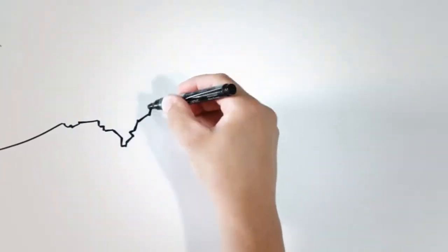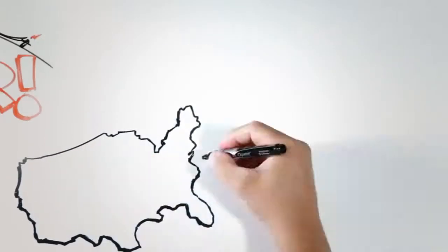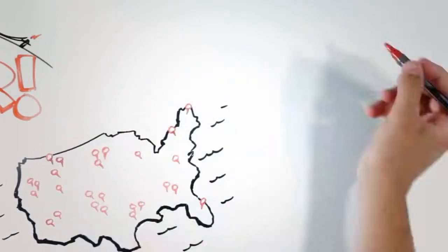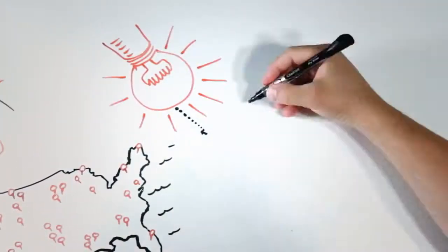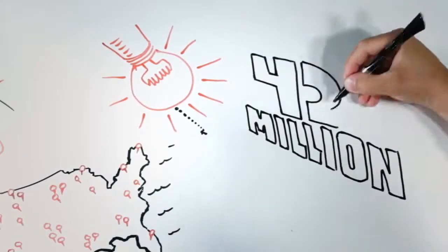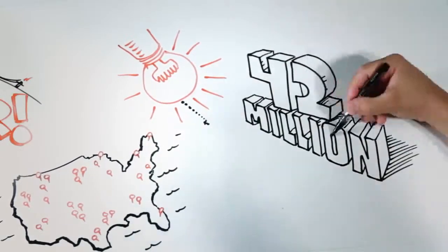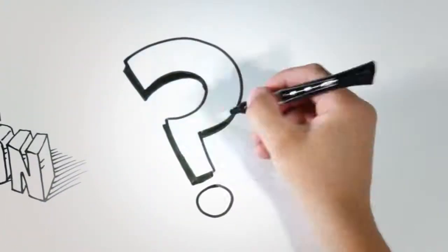Soon electric cooperatives popped up all across the country, transforming the way of life in rural America. Today there are more than 900 electric co-ops in the US, bringing electricity to some 42 million Americans. So how do cooperatives work?